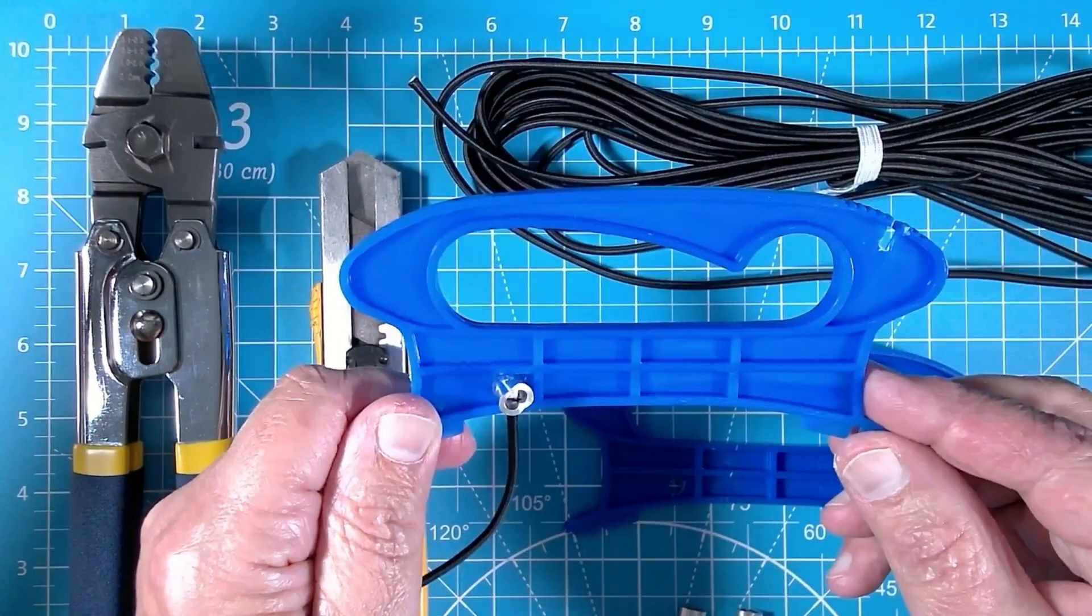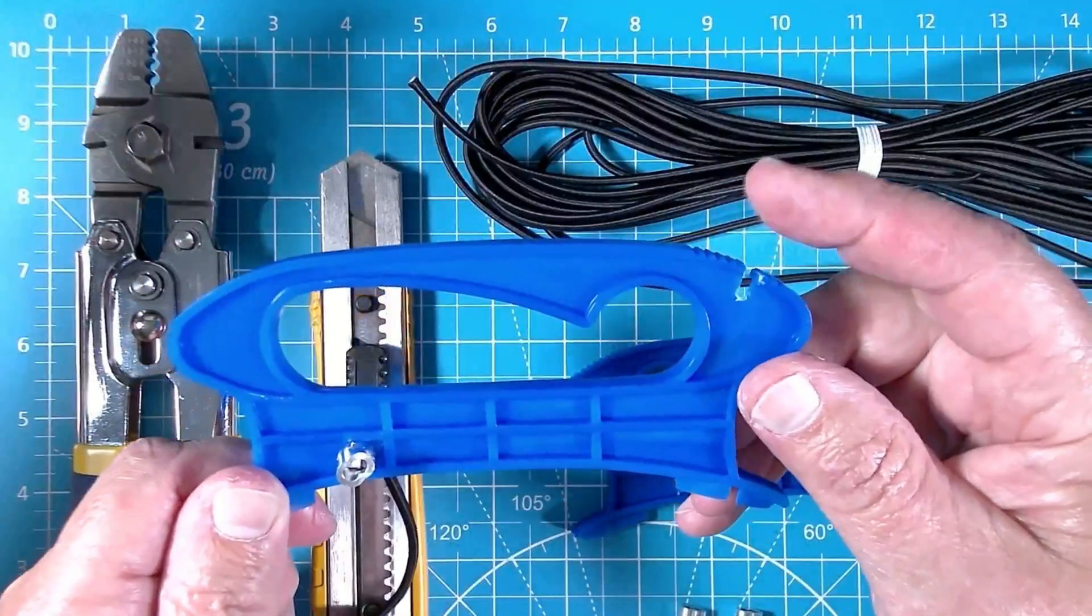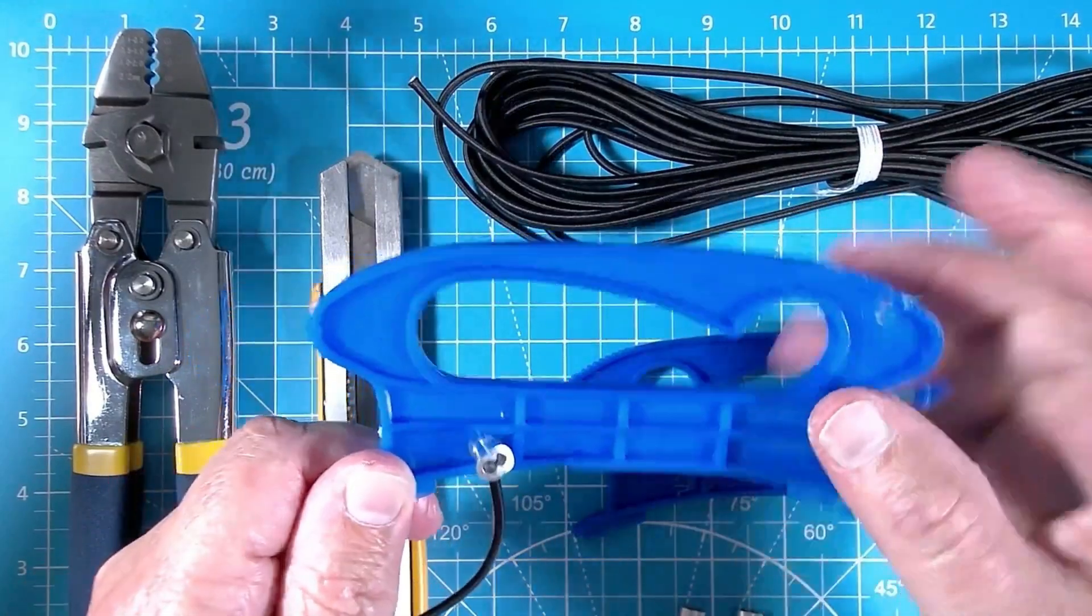Here's one I've already completed. I used the existing hole that was already in the winder. I cut a notch in the top right corner to accept the shock cord as I wrap it around.